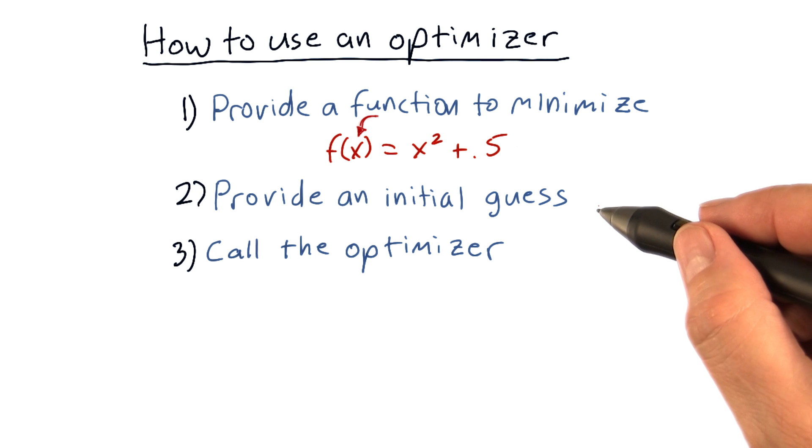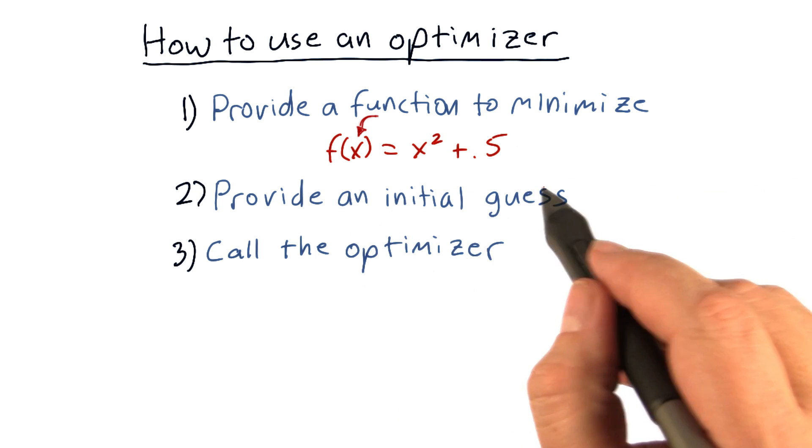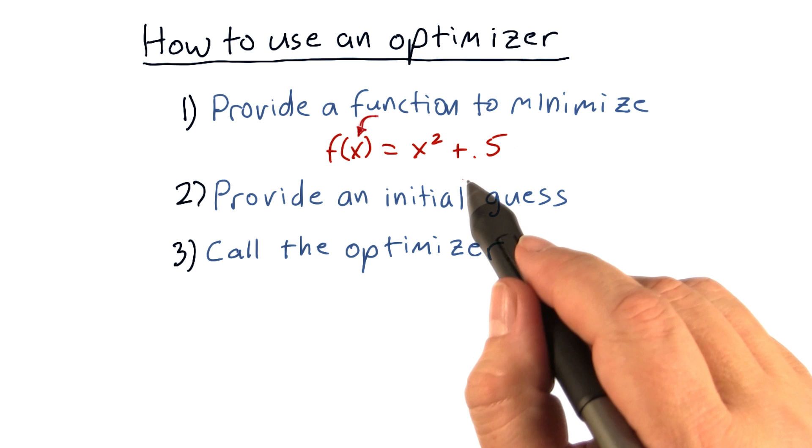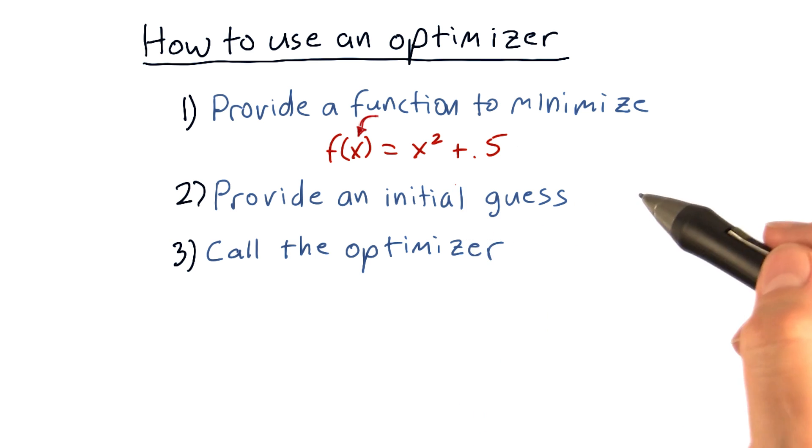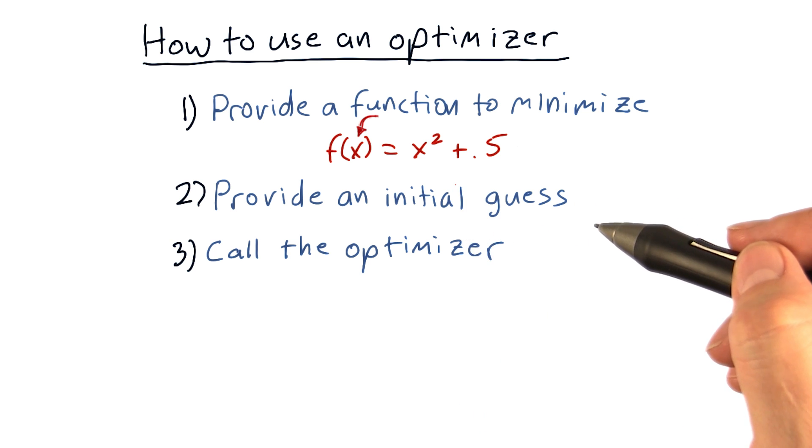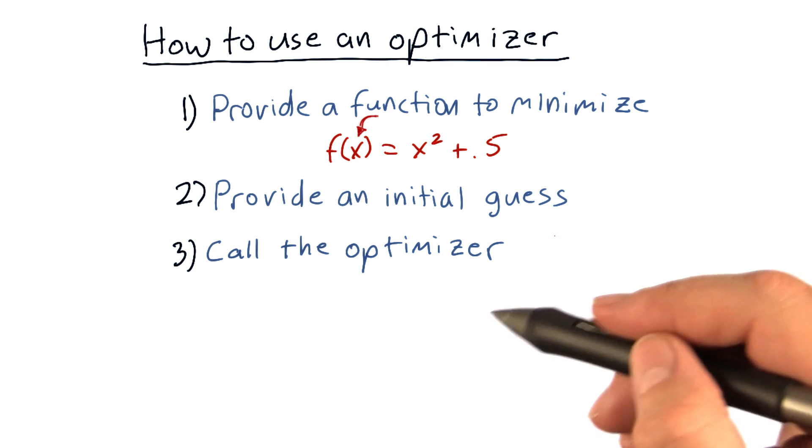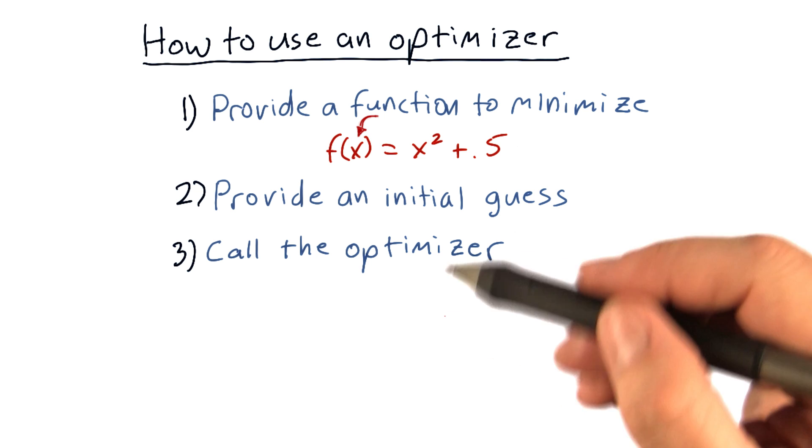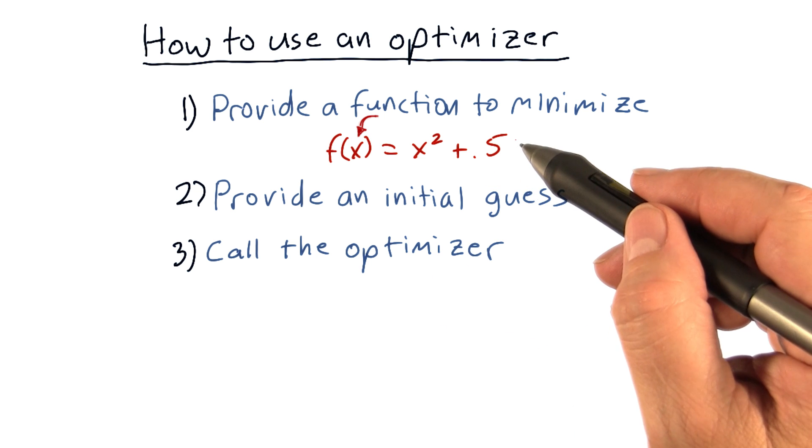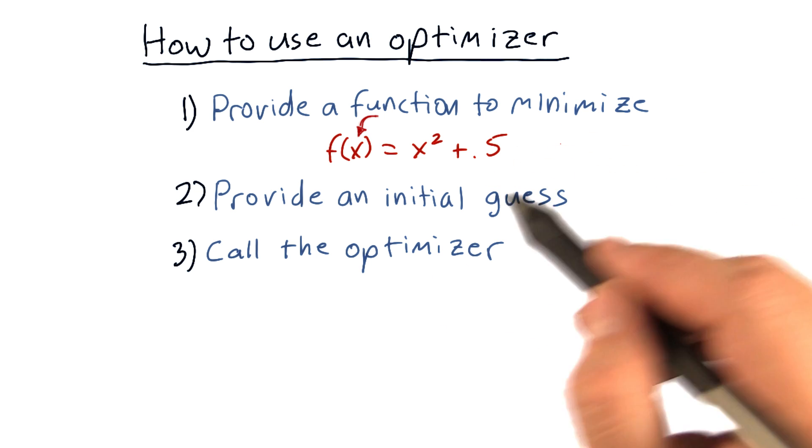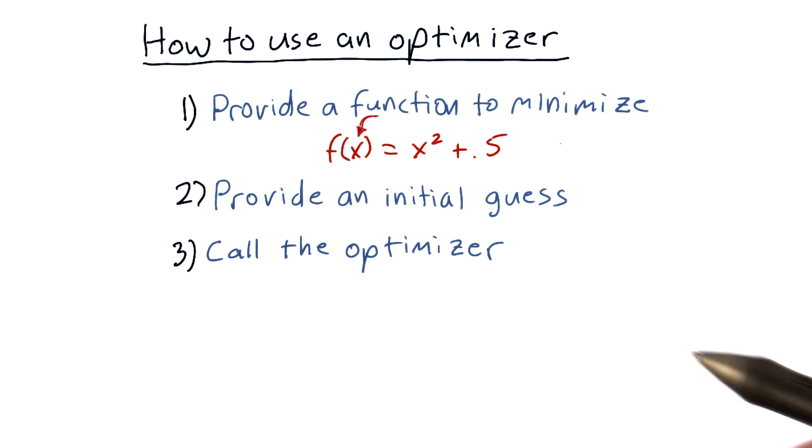You also need to start with an initial guess for x that you think might be close to the solution to the problem. If you don't really know, you can choose a random value or just some standard value. The optimizer starts with that guess, and it repeatedly calls the function, tests different values, and narrows in on the solution.